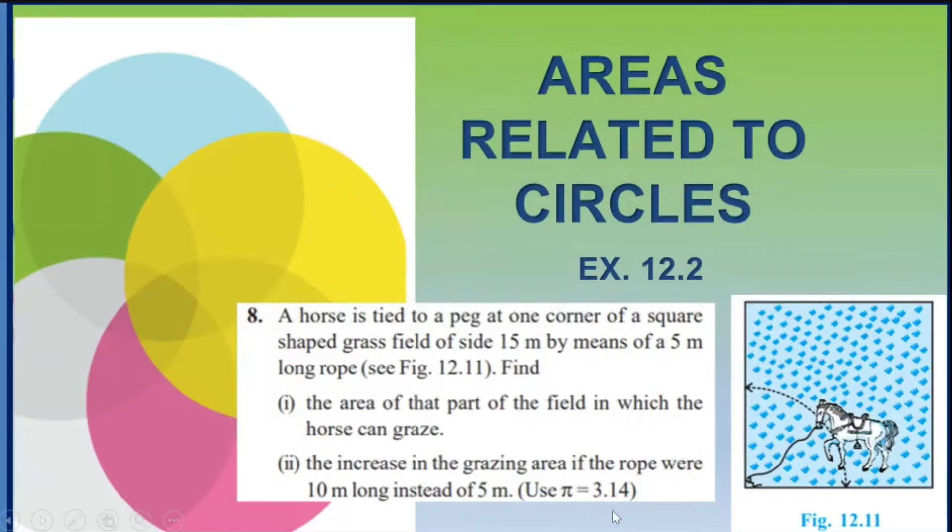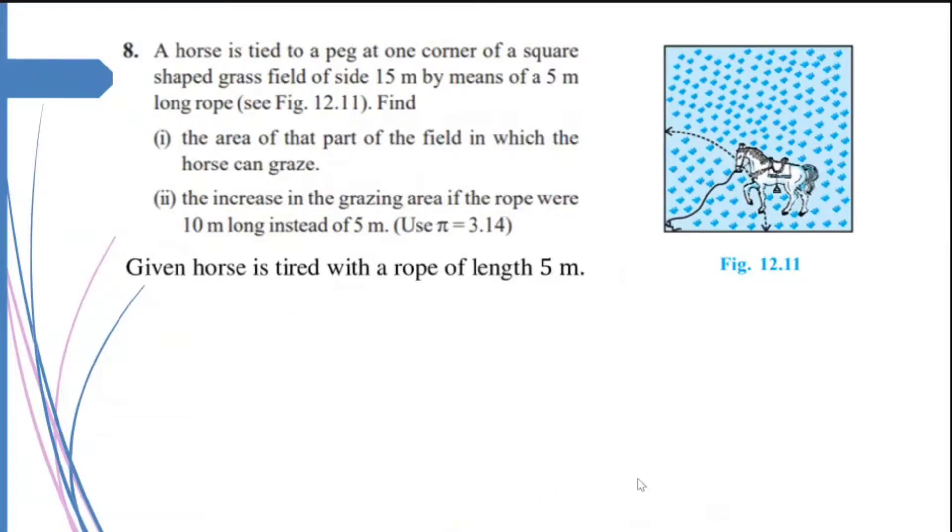So let us try to solve this question. What is given? A horse is tied with a rope of length 5 meters. Now, what is the area over which it can graze? You know that if you just see the figure,